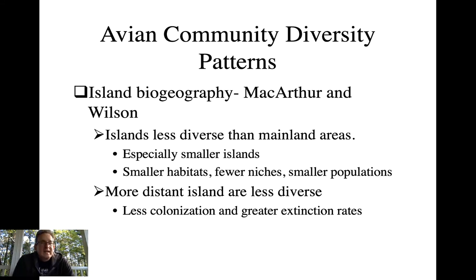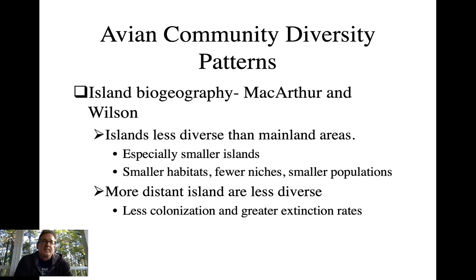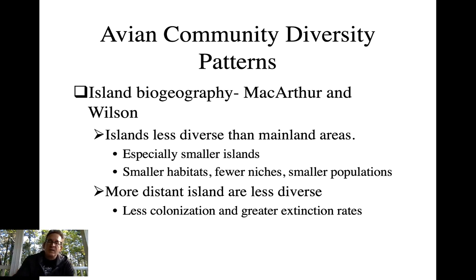Bigger islands can maintain something closer to mainland-type community complexity with more species. Islands closer to mainlands can be more like the mainland because they exchange individuals from various locations and will be more diverse. More distant islands are far less diverse — there are greater extinction rates, and once something goes extinct on a very isolated island it's a while before another species happens to fly out there and establish a new colony. The more distant you are, the greater the extinction rates and the less recolonization occurs.